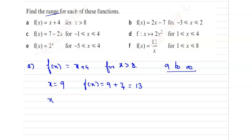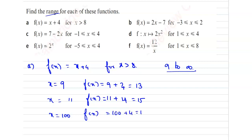Then take any value between 9 and infinity. Take x equal to 11. So, f of x equal to 11 plus 4, which is 15. Next, consider x equal to 100. So, f of x will be 100 plus 4, which is 104, and so on. Hence, from this we can say that the range will be f of x greater than 12, meaning after 12 we are considering all the values. So, f of x will be greater than 12 — that is the range.